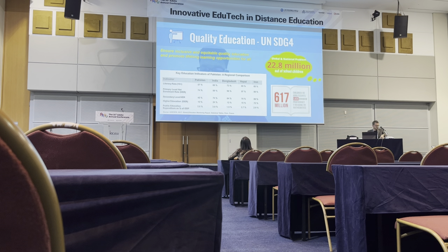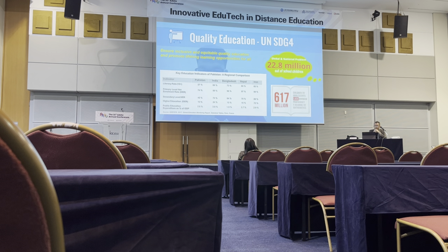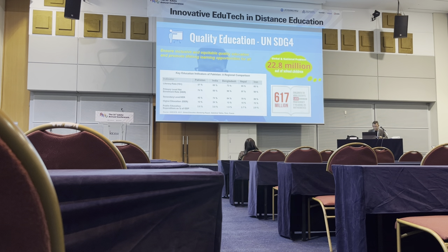My research is backed by UN Sustainable Development Goal number four, which says to ensure inclusive and equitable quality of education and promote lifelong learning opportunities for all. The statistics backed by SDG four are very alarming. There are more than 22.8 million children who are out of school, and around 670 million children and adults who lack minimum proficiency in reading and mathematics. Looking at the indicators in our area of Asia, all of them are very alarming, and we really need to work on improving the quality of education.